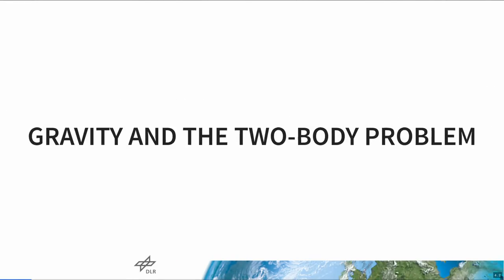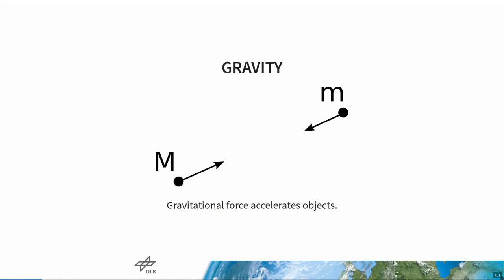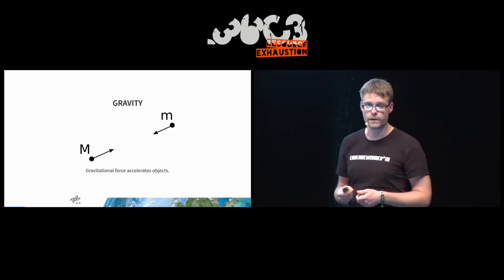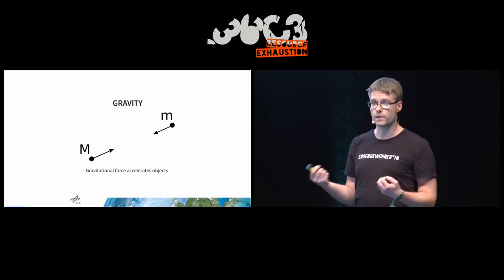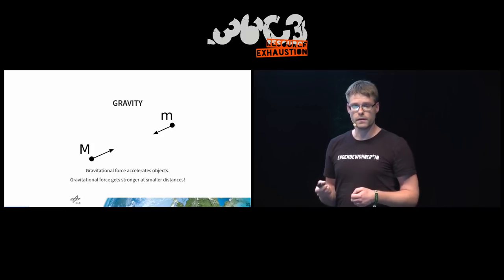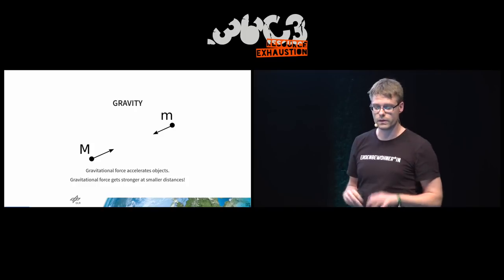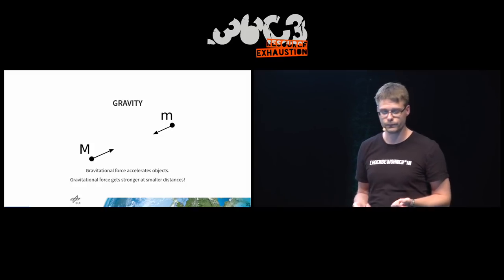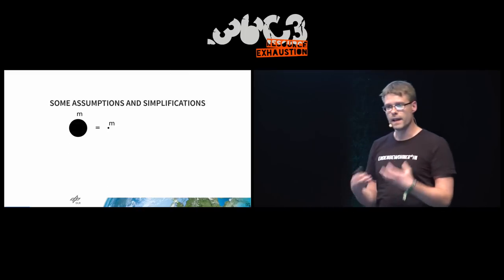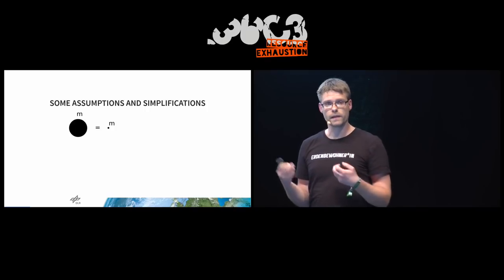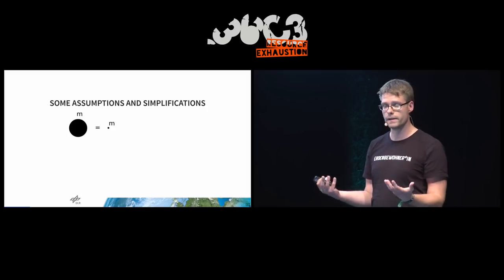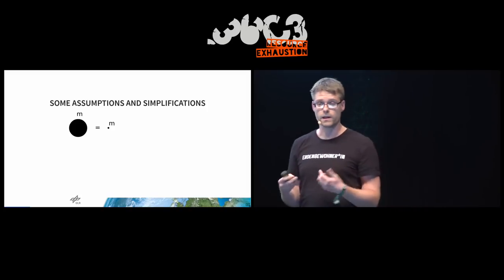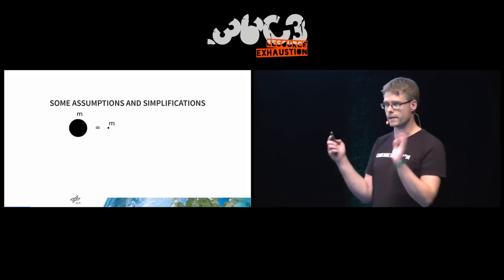First off, we have gravity and the two-body problem. I'm standing here on stage and I'm actually being accelerated downwards — the Earth attracts me. This is the same thing that happens for any two bodies that have mass: they attract each other by gravitational force, and this force will actually accelerate the objects towards each other. The force depends on the distance — it gets stronger the closer the objects are. We will make a few simplifying assumptions: all our bodies — the Sun, Earth — will actually be treated as points.